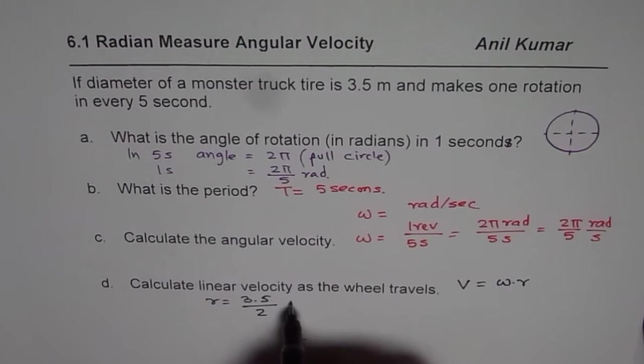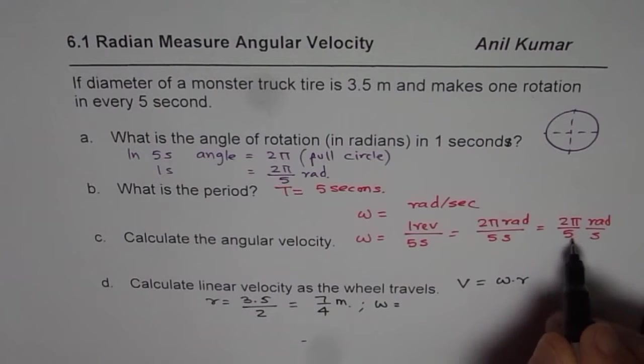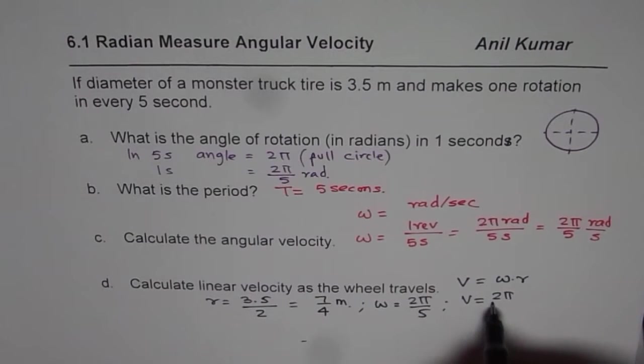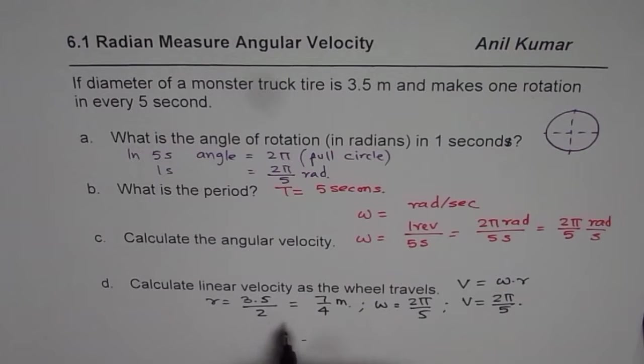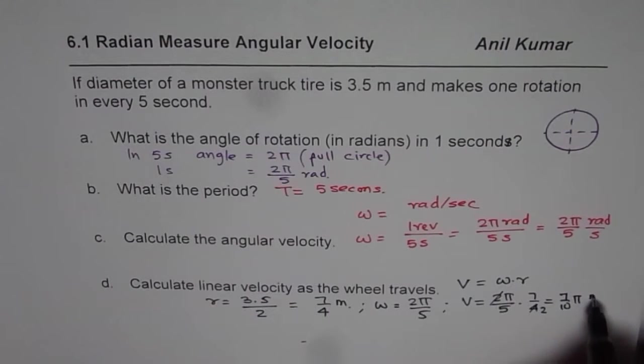We could write this in fractions. We can write 3.5 over two as seven over four. And the units are meters. And omega we have seen is equal to two pi by five. So velocity will be equal to two pi by five times the radius which is seven over four. So which we can simplify and then write this as seven over ten pi meters per second.